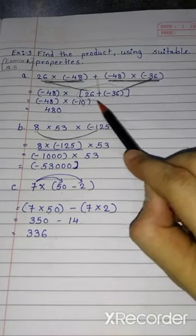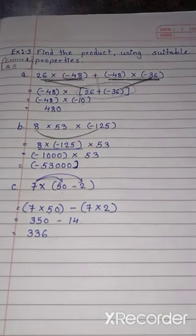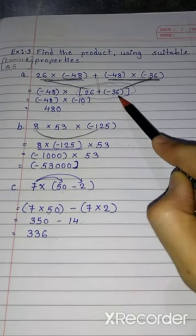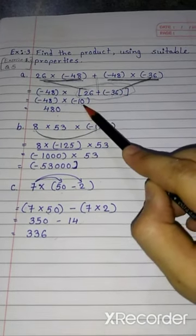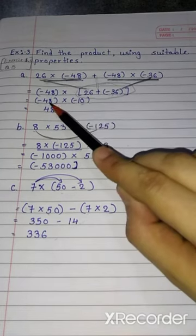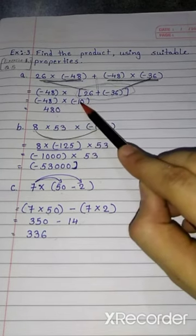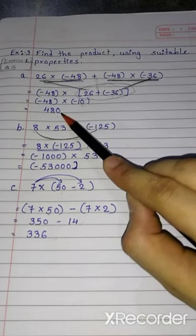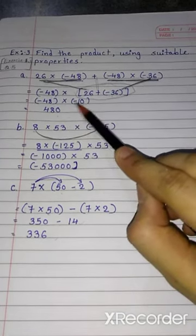First find the answer. For this calculation, 26 plus minus 36 will get minus 10. So, minus 48 times minus 10. We have learned if we have to multiply both negative integers, the answer will be a positive integer. 48 into 10 is 480.